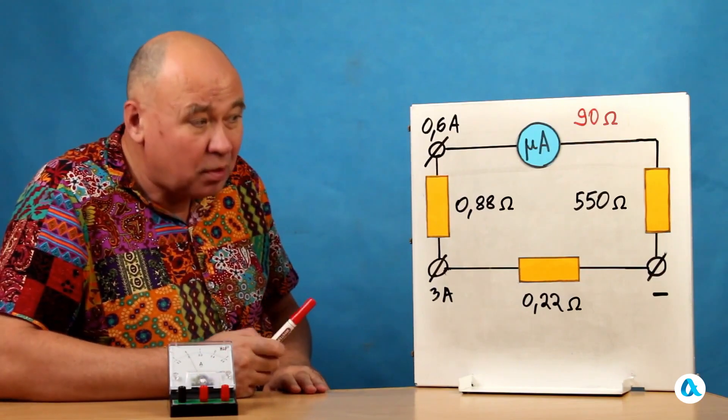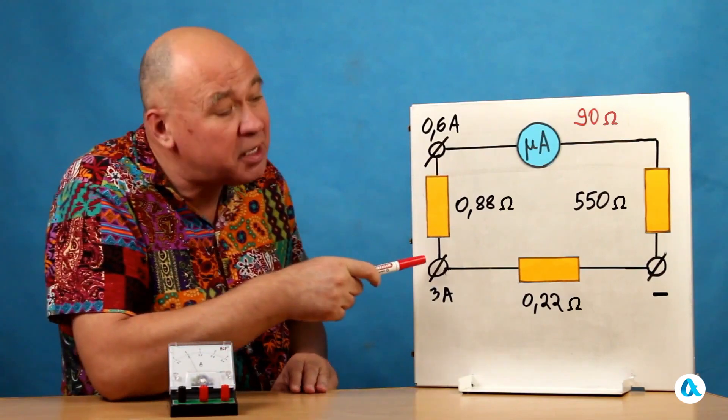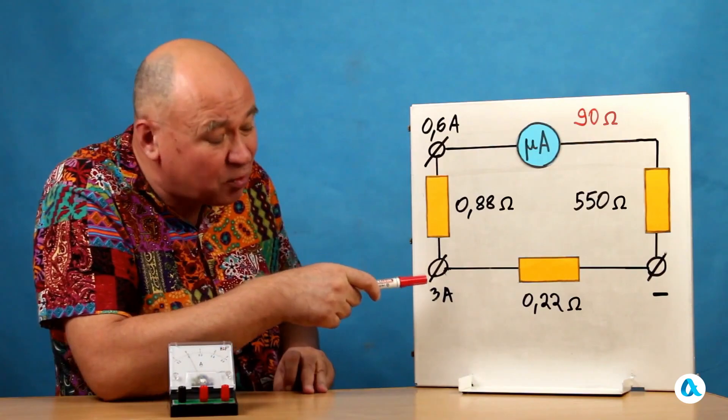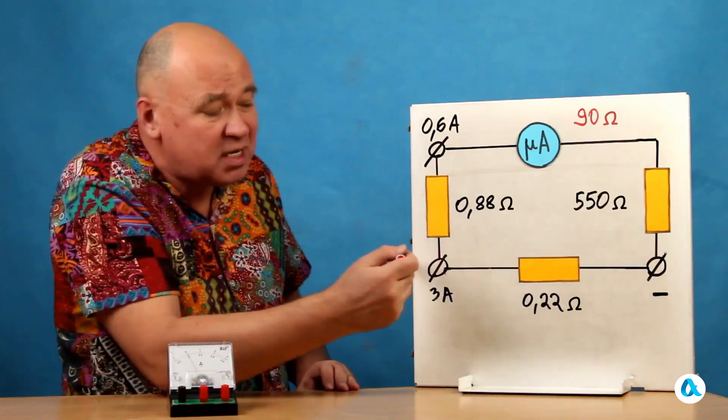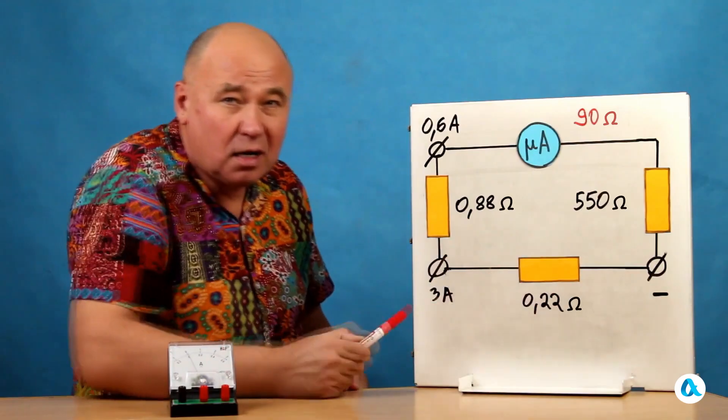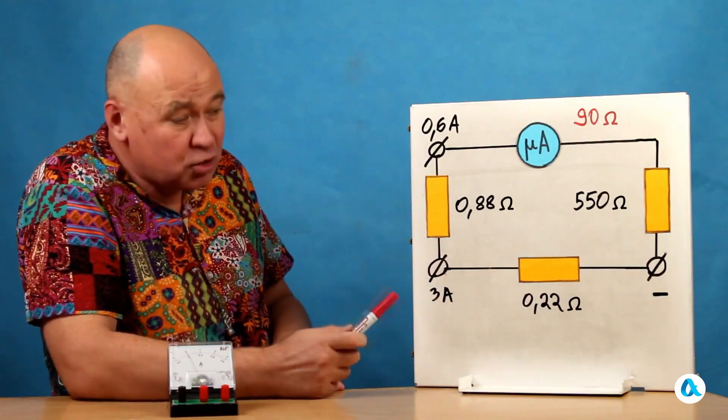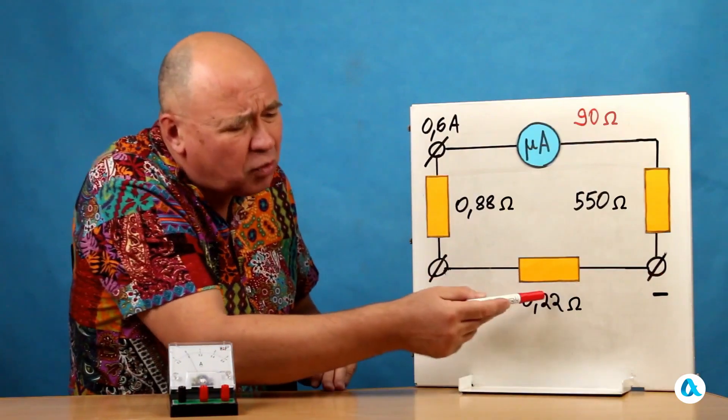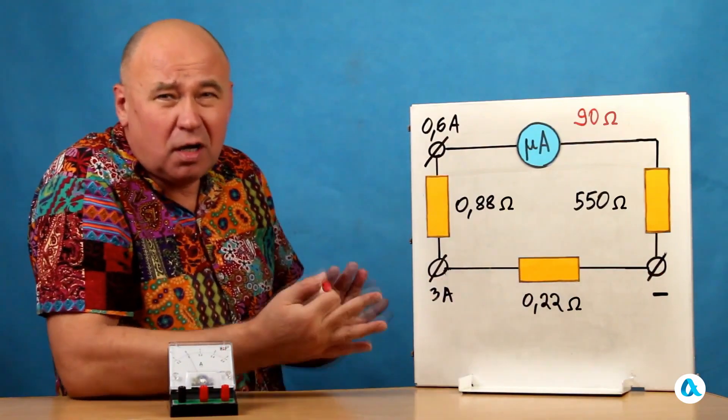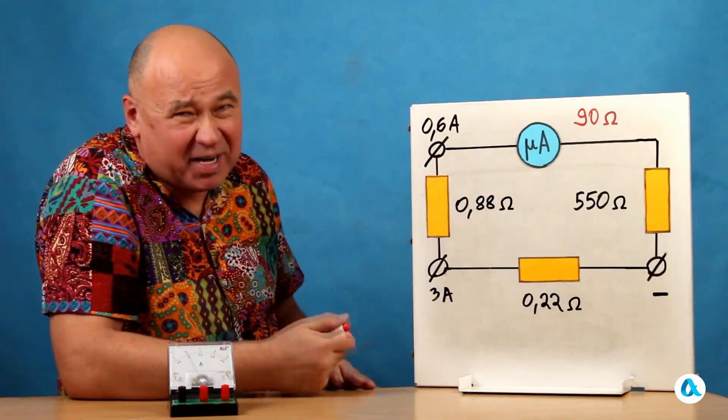That's why the resistors inside are arranged as follows. Here, I have the 3-amp terminal and here is the negative terminal. And right here, there is a resistor of 0.2 ohms. Essentially, the entire current will flow through it. And it's so small in value that the currents in the circuit will hardly change because of it.